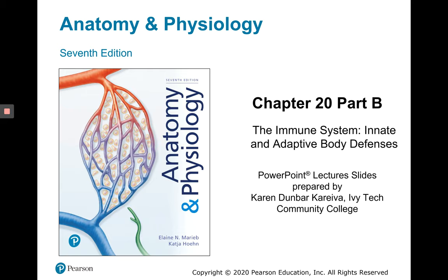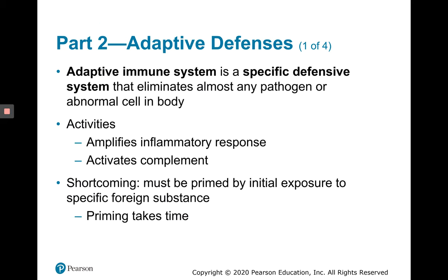Today we're going to be looking at Chapter 20, Part B, and we're still looking at the immune system. We're now looking at the third line of defense, or the adaptive immune system, which is a specific defensive system that eliminates almost any pathogen or abnormal cell in the body.